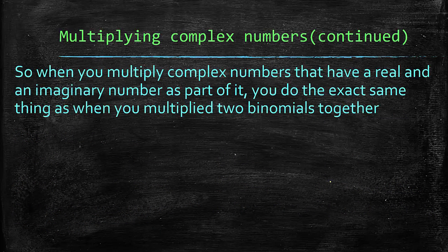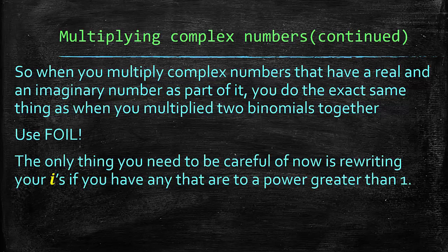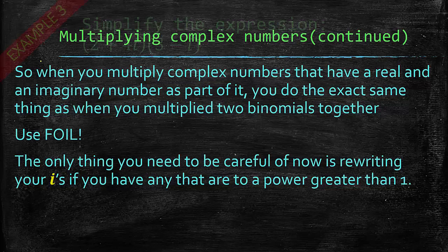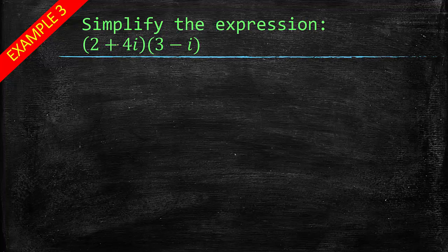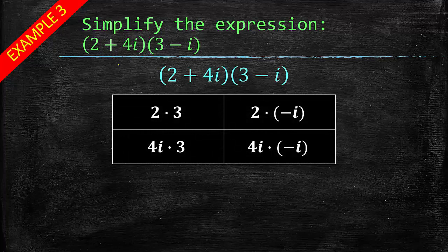So when we multiply complex numbers that have a real and an imaginary number as part of it, you do the exact same thing as when you multiply two binomials together - you use FOIL. The only thing you need to be careful of is when you're rewriting anything that has an i in it that is to a power greater than one, you need to be aware of what we just went through. For example, we have 2 plus 4i times the quantity, or times the difference of 3 and i. So we use FOIL.